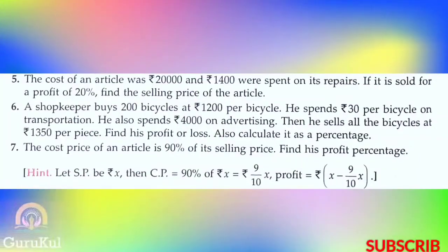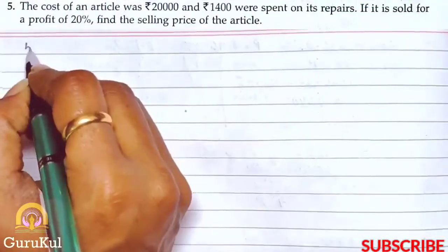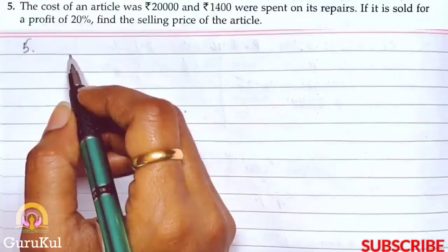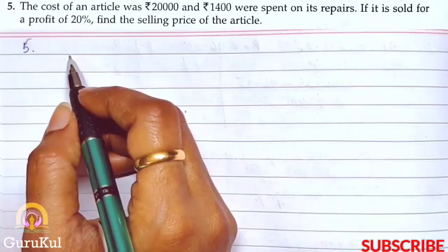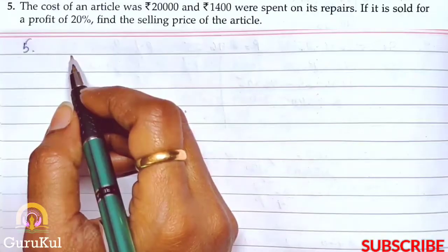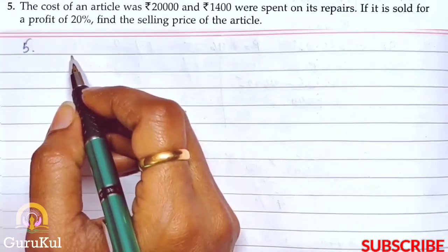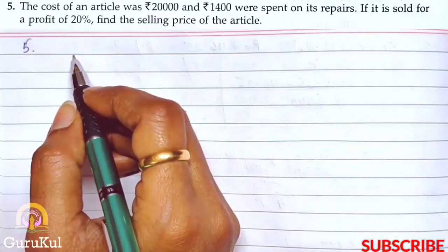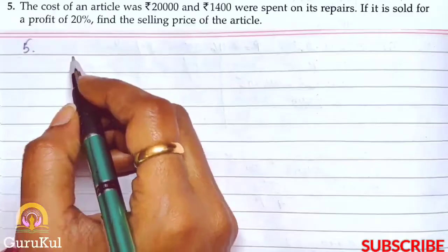Today I am going to start with Part 2 of Exercise 7.2, Question number 5. The cost of an article was rupees 20,000 and rupees 1,400 was spent on its repairs. If it is sold for a profit of 20%, find the selling price of the article.